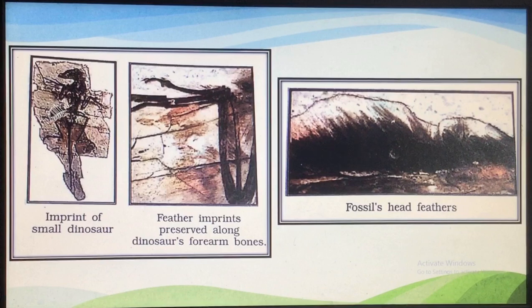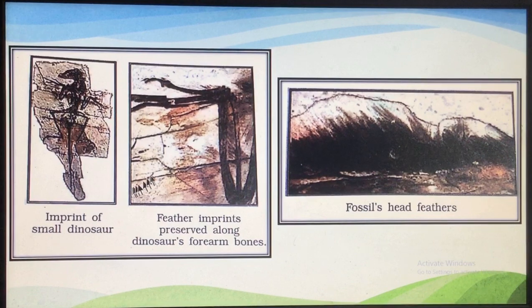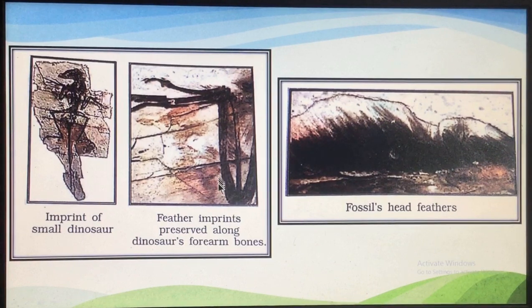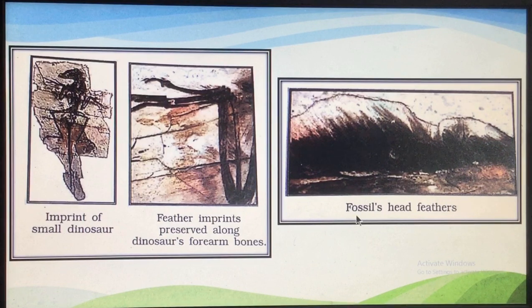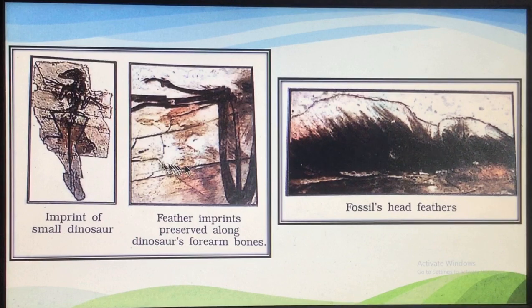These are just fossils — an imprint of small dinosaurs showing feather imprints. These feathers are preserved along the forearm of the dinosaurs. The forearm consists of humerus, radius, ulna, carpus, metacarpus, and phalanges. These forearms were covered with feathers. There is also a fossil of the head of a dinosaur in which feathers are present. This tells us that these feathers were used by the dinosaurs not for flying, but for insulation.